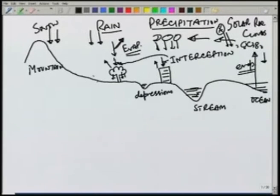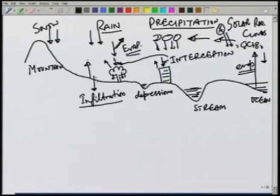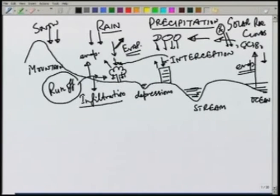The part which reaches the ground can go into the ground — known as infiltration. It may evaporate from the ground surface or it may runoff over the ground. Runoff is one component in which we are very interested, because this is what will govern the flow in the streams. If we are designing an irrigation project or water supply project, we should know how much water is available in the streams. Runoff is a very important component of the hydrologic cycle.